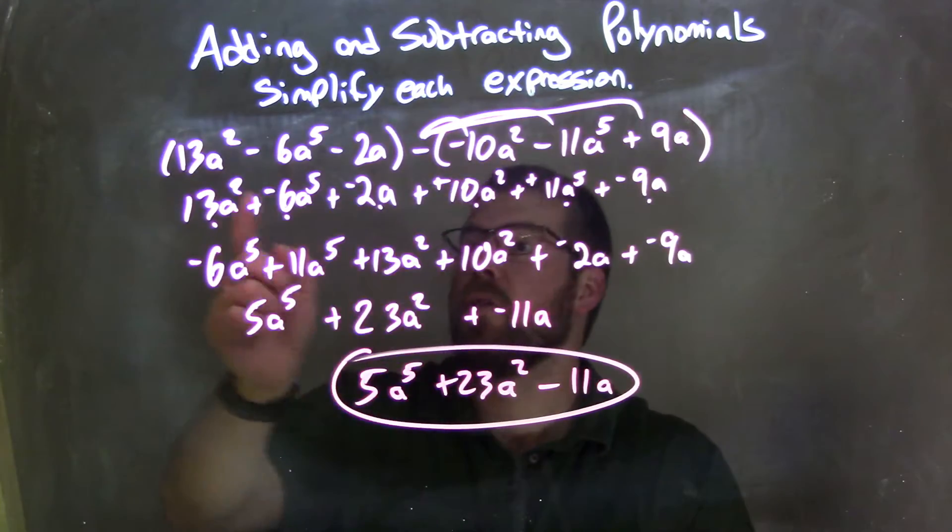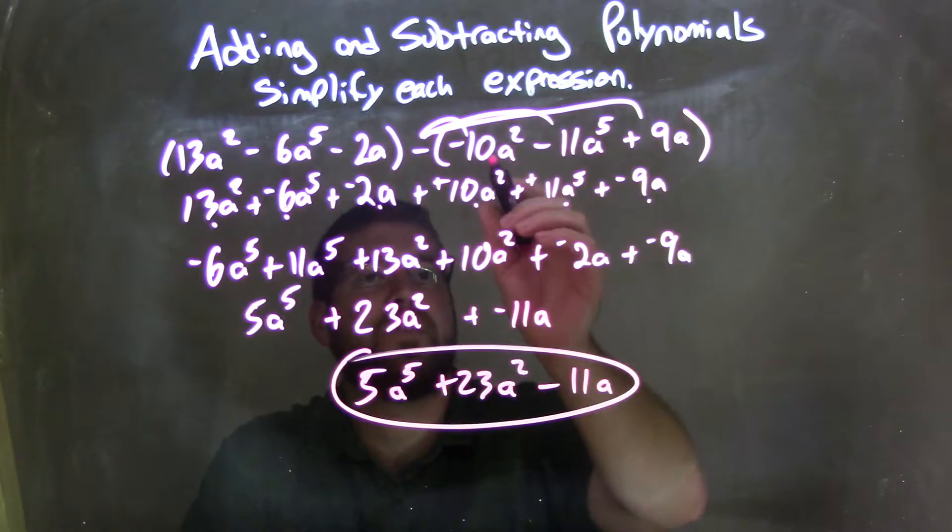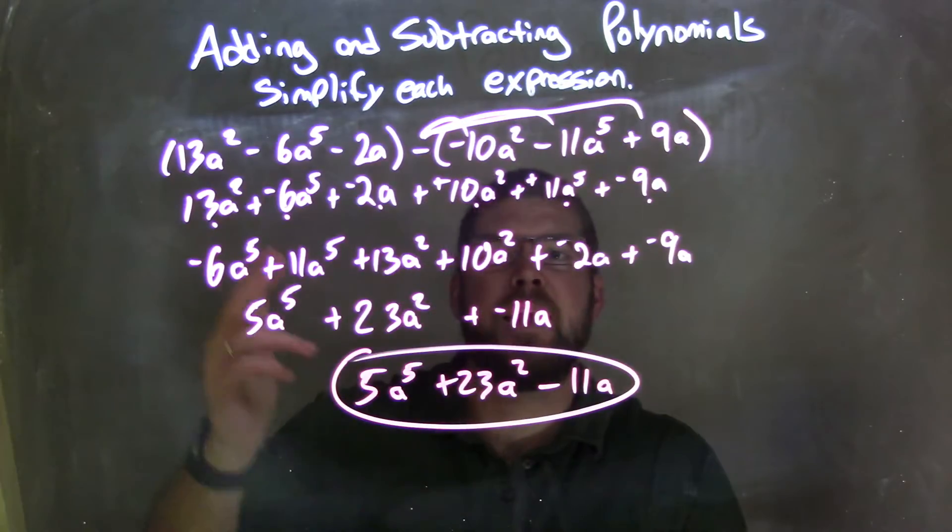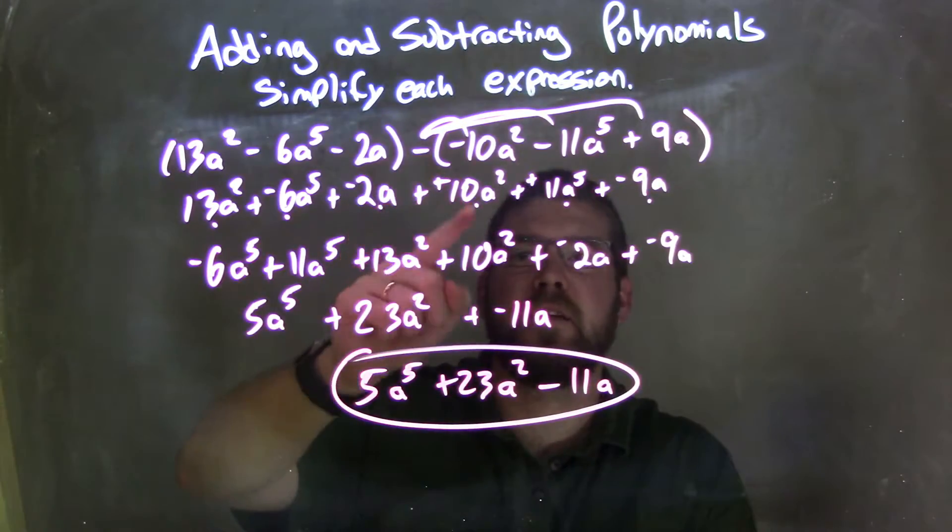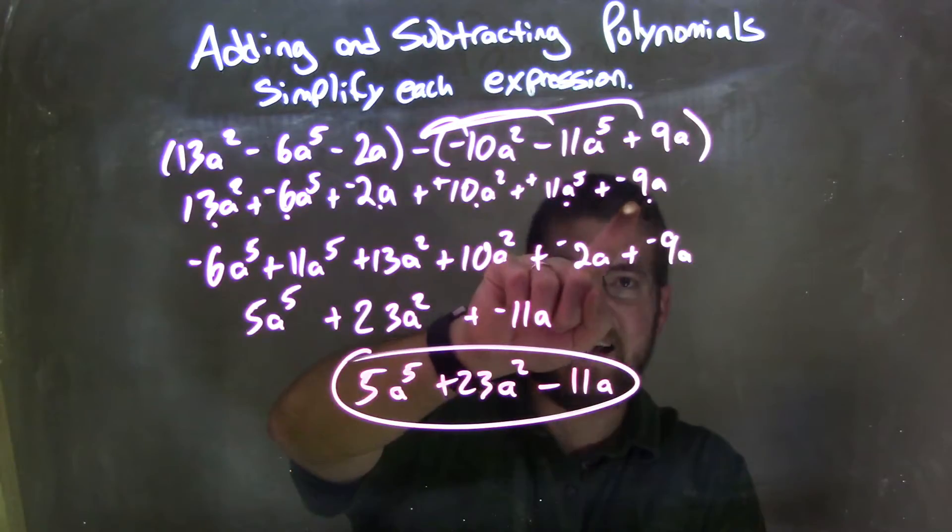So let's recap. We're given 13a squared minus 6a to the 5th minus 2a in parentheses, subtracting parentheses, negative 10a squared minus 11a to the 5th plus 9a. I made everything adding a negative, and I distributed my subtraction sign, giving me a positive 10a squared, positive 11a to the 5th, and then plus a negative 9a.